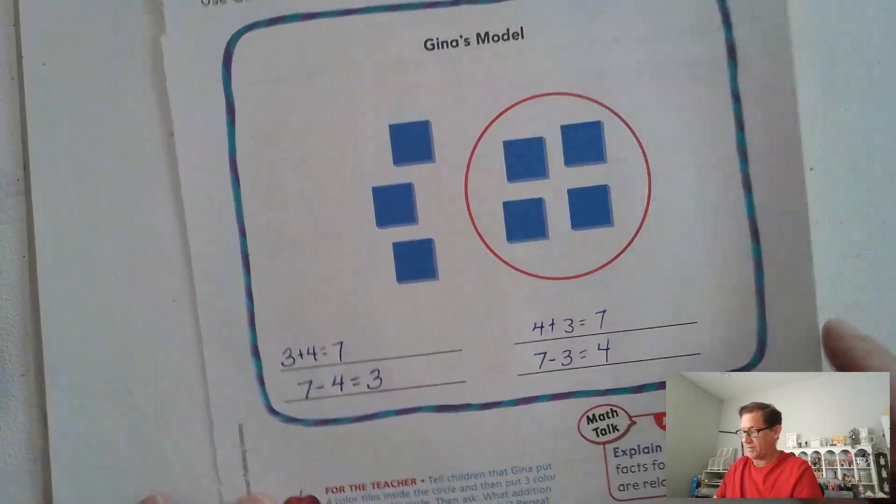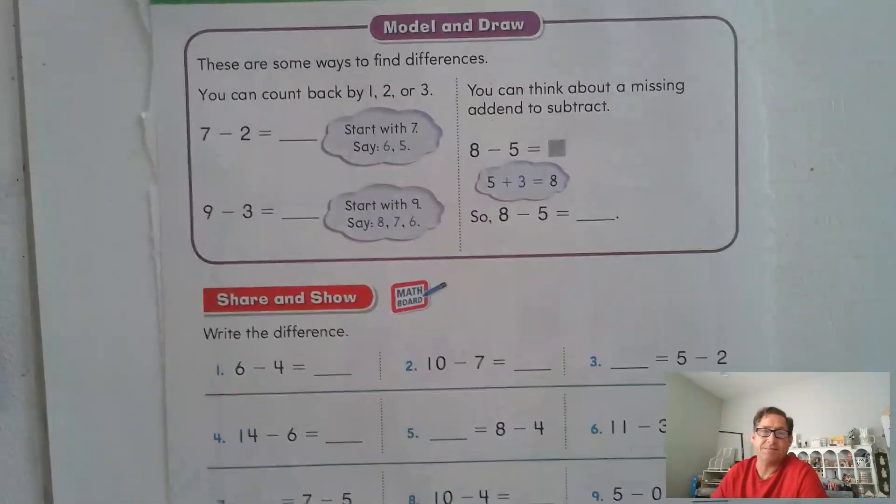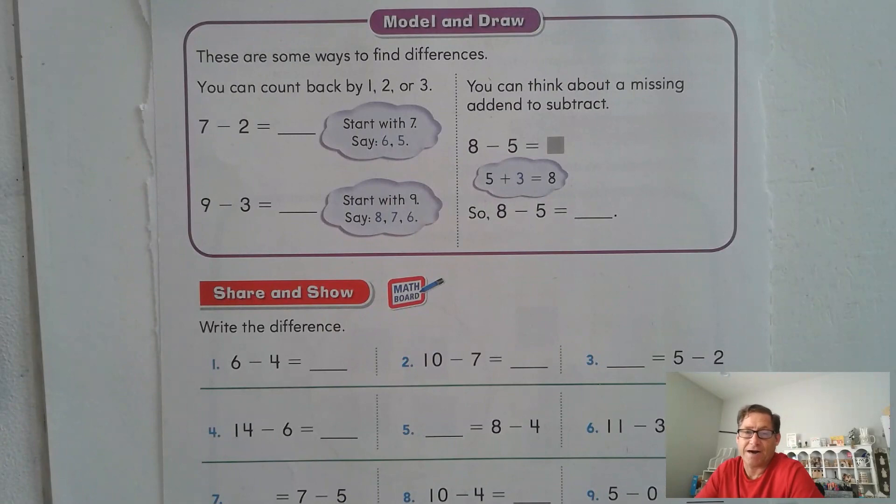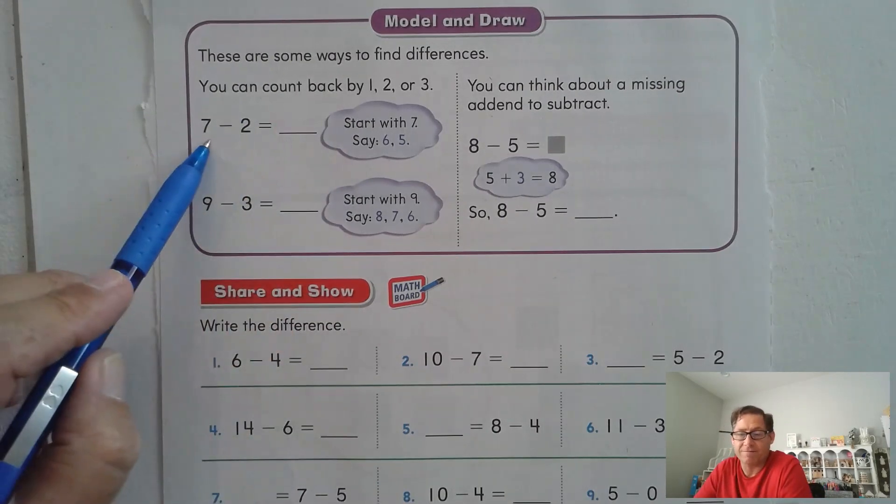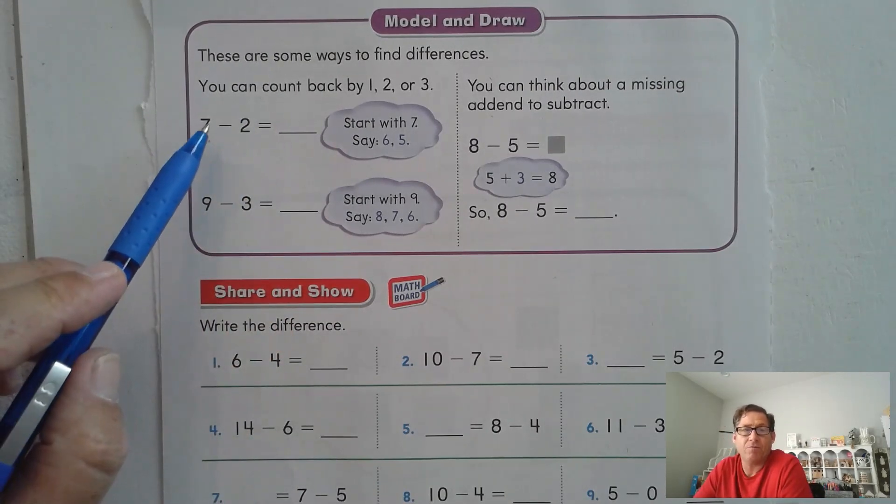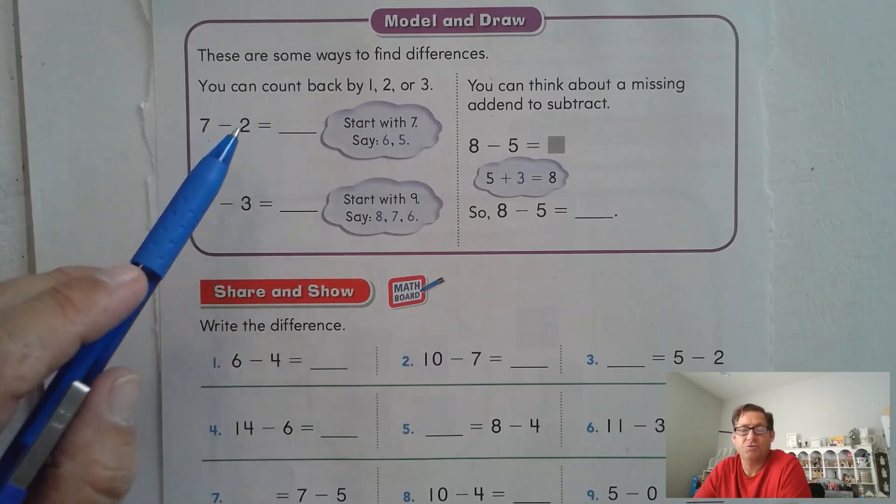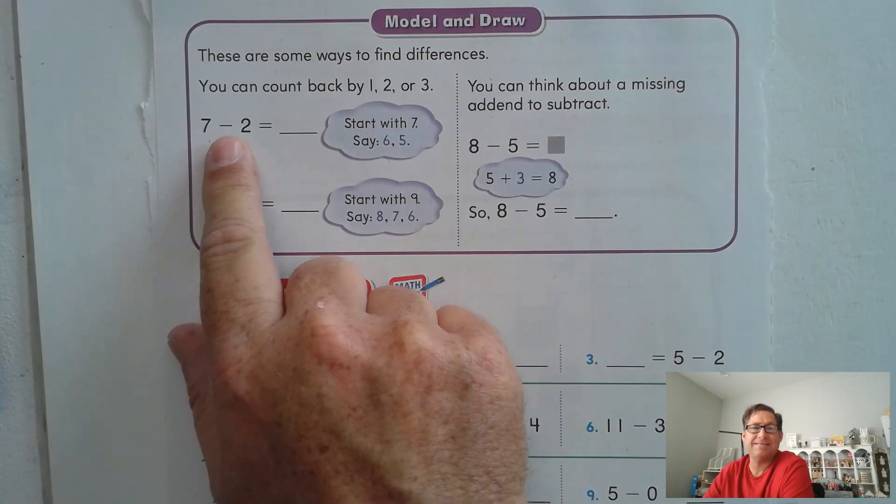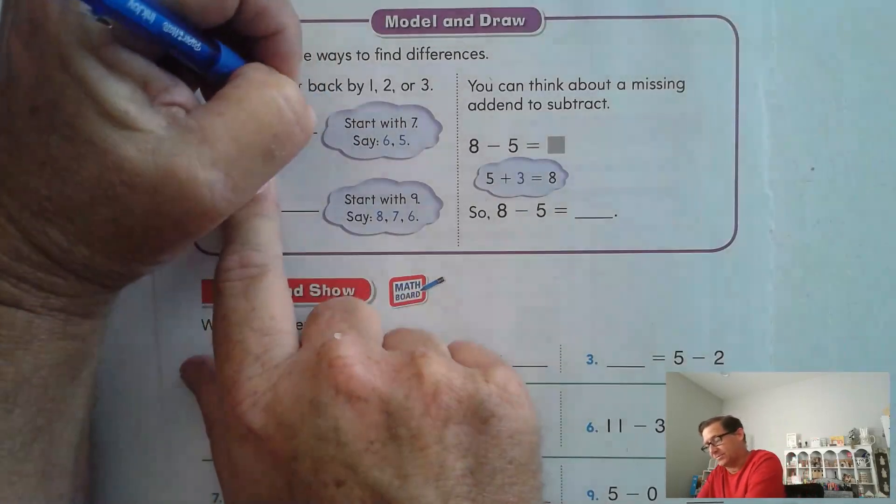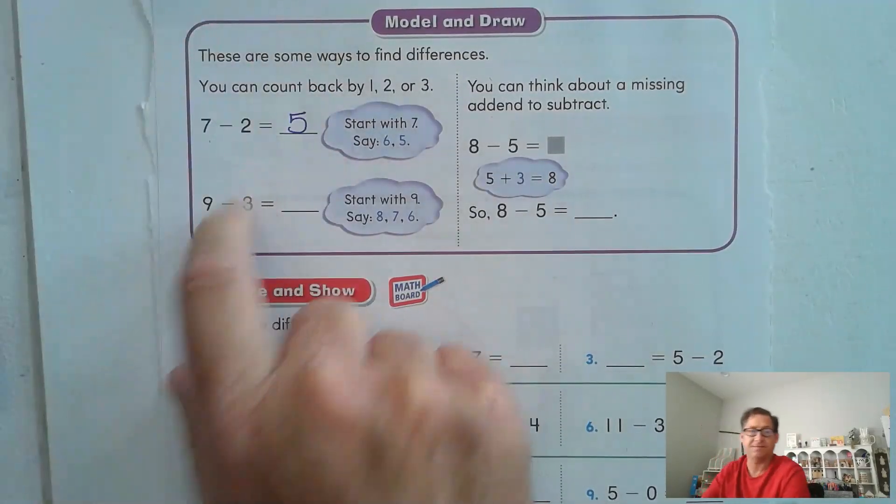Okay, let's look at page 142. So these are some ways to find differences. Differences mean to subtract. We can count back by 1, 2, or 3. For instance, if we have 7 minus 2, we would start with 7 because that's where we're at, and we would count back two spaces. So 7, that's where we're at, 6, 5. So 7 minus 2 is 5.